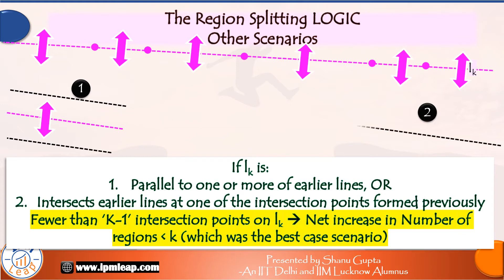In the second possibility, all three lines intersect at the same point. So, this third line, the pink line, passes through and splits only two regions. Thus, it increases only two regions in our plane.